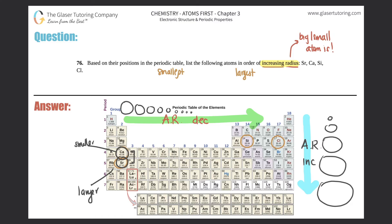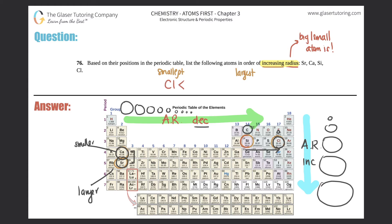Now for the period trend: going from left to right — from silicon all the way to chlorine — atomic radius decreases. So chlorine should be super small, and silicon should be much larger. Chlorine is the smallest of all four, because you have to go all the way to the right to reach it. So the order is: chlorine is smaller than silicon, silicon is smaller than calcium, and calcium is smaller than strontium. That is your trend.